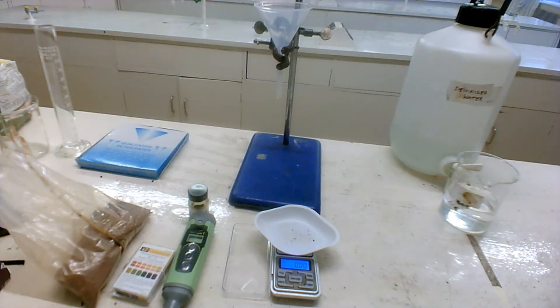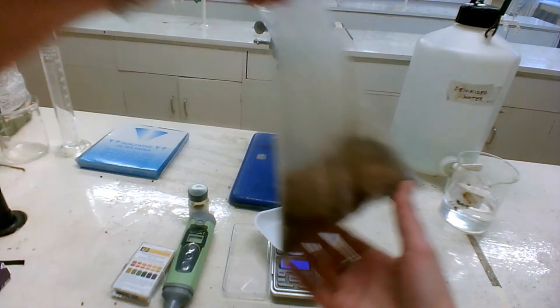So the first step would be to measure out your soil sample. I'm going to get about 20 grams of this soil sample. It's dry and it's a sandy soil.